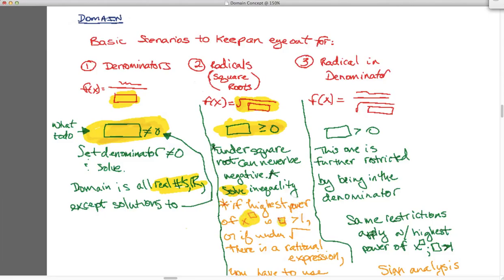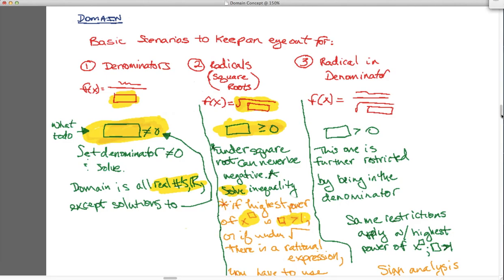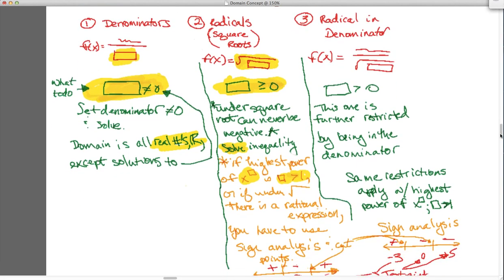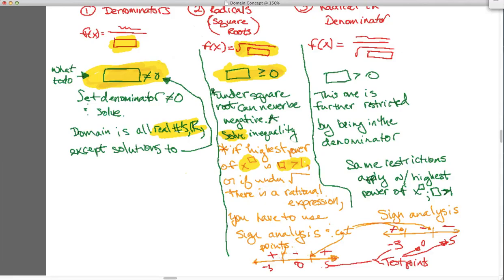x or the degree is greater than one, you cannot just outright solve it. What you have to do is you have to do a sign analysis. And the sign analysis, you basically set it equal to zero and you get these cut points.